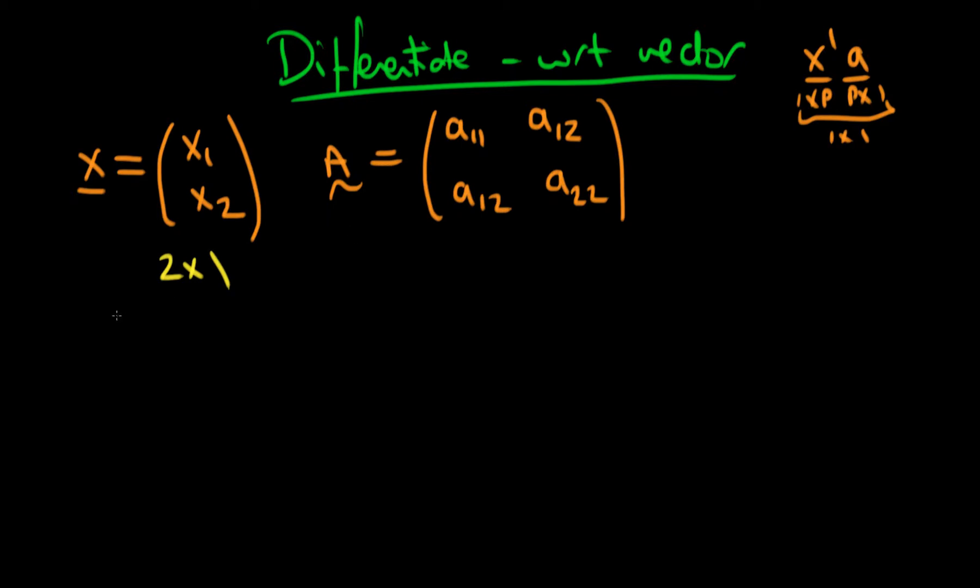If we then take these two things and we multiply them together in a certain form, we can get something which we refer to in matrix notation as the quadratic form. So if we take x transpose and then multiply it by A, our symmetric matrix, and then multiply it by x, this is what we refer to as the quadratic form of matrix A.